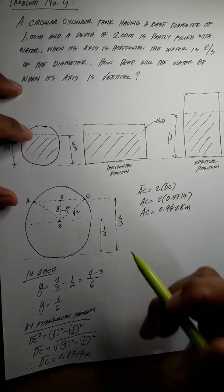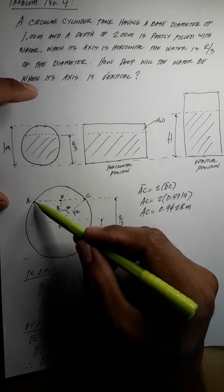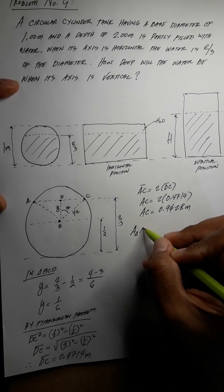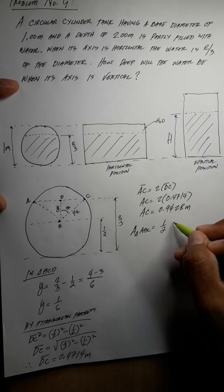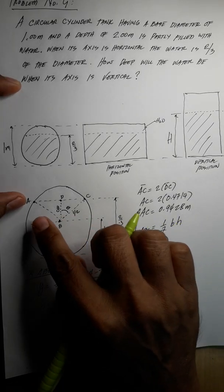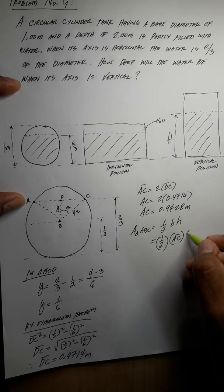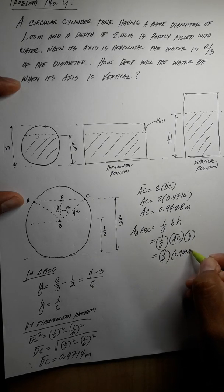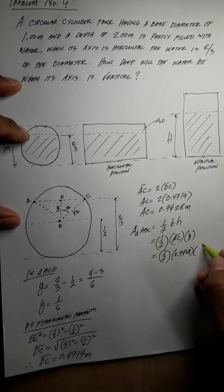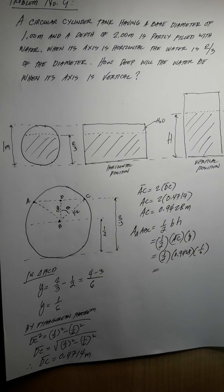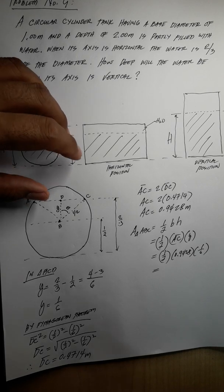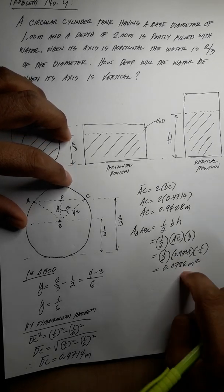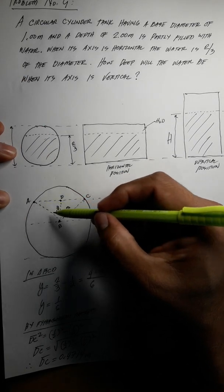Now we have the base, so we can get the area of triangle ABC. Area of triangle ABC equals one-half times base times height. Our base is AC, which is 0.9428, times the height Y, which is one-sixth. So the area of triangle ABC equals 0.0786 square meters.